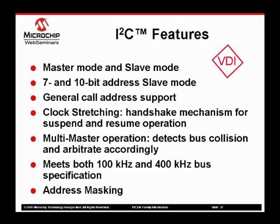The device meets both 100 kHz and 400 kHz bus specifications. FSCL can go as high as 1 MHz. Address masking is also available to allow the device to monitor more than one address, which is described in more detail on the next slide.